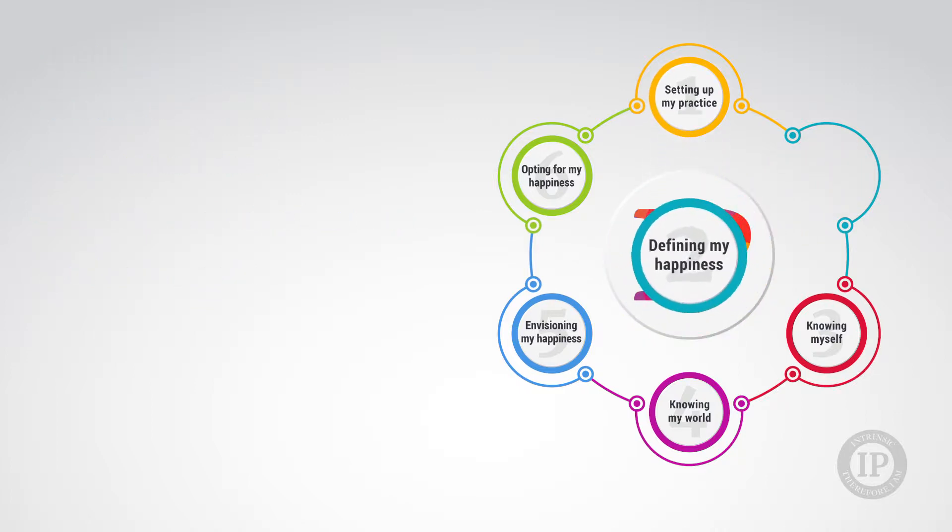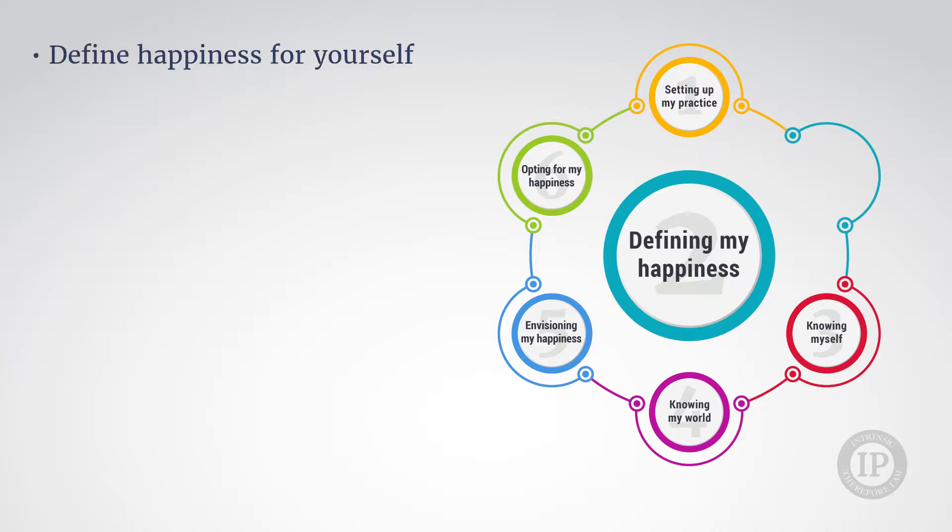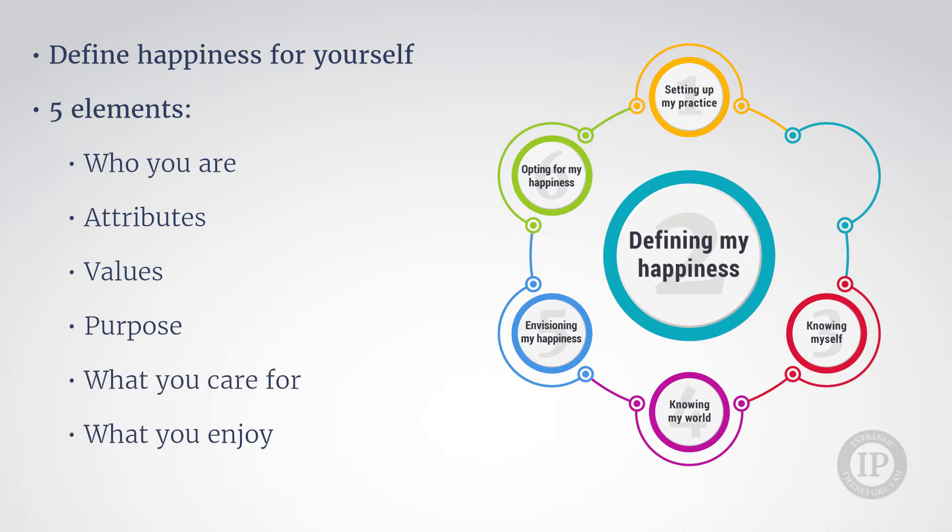The second step, entitled Defining my happiness, is where you can learn to define your happiness specifically for yourself according to five elements: namely, who you are, your attributes as a person, your values, your purpose, what and whom you care for, and what you enjoy. All of these very specifically for yourself.